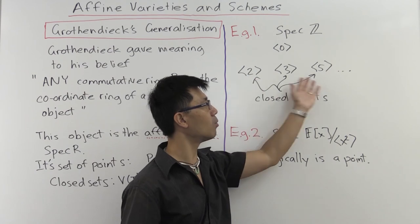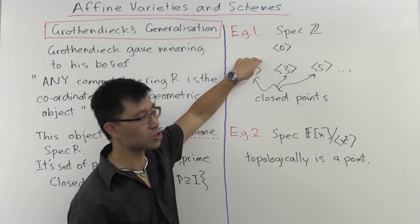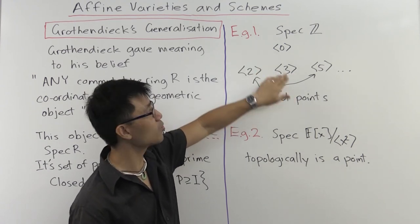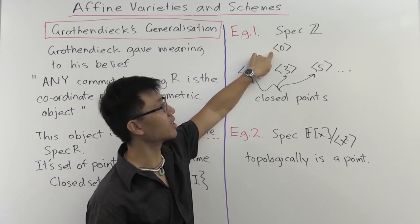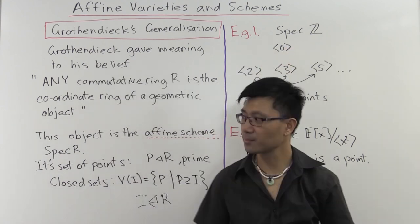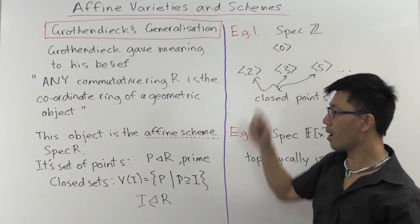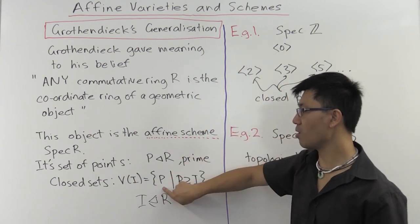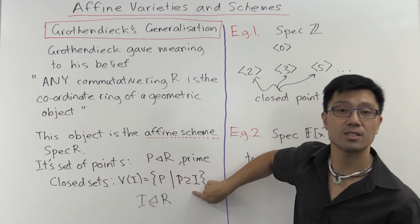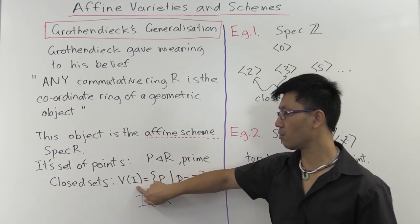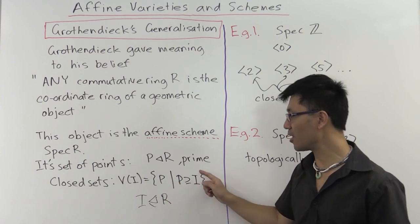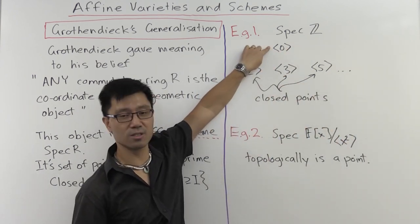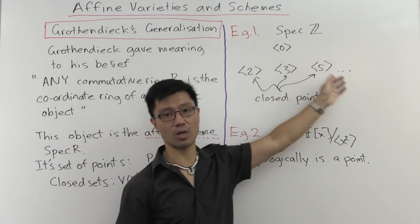What's special about the maximal ideals? Topologically, they're the closed points. The easiest way to see why is to see why the zero ideal is not closed. If the zero ideal were a closed point, it would have to be of the form V(i) for some ideal i. Since the zero ideal contains (0), we'd have V(0) — but all prime ideals contain (0), so the closure of this point is actually the whole spectrum. So the zero ideal is not closed. A similar argument shows that each of the maximal ideals is closed.